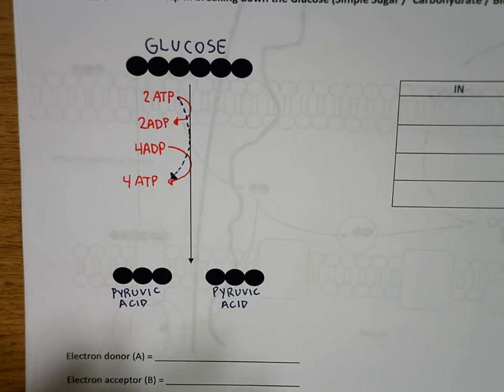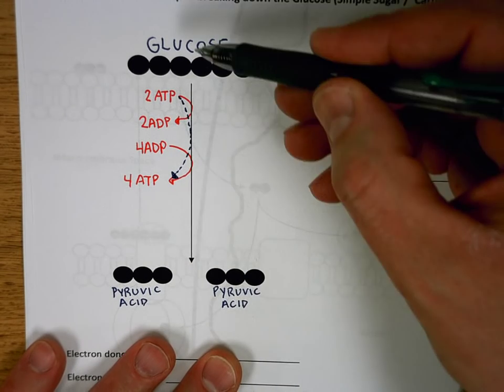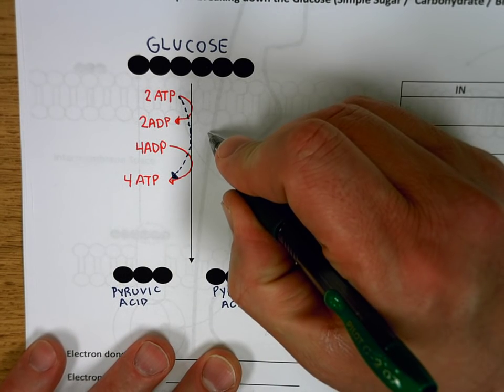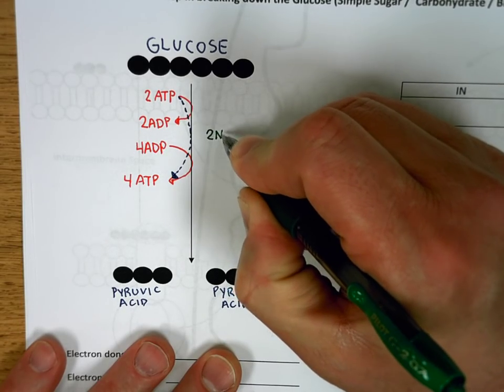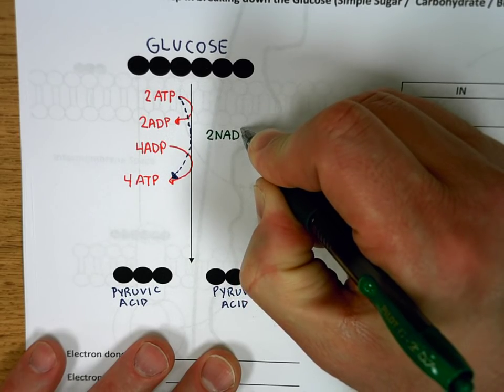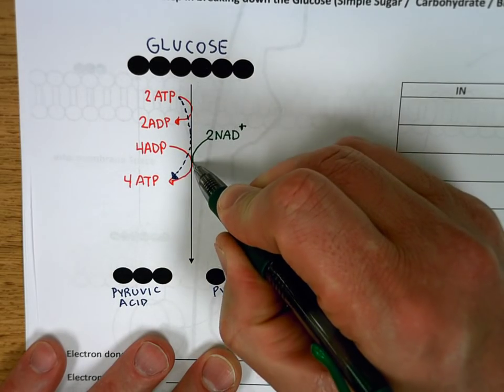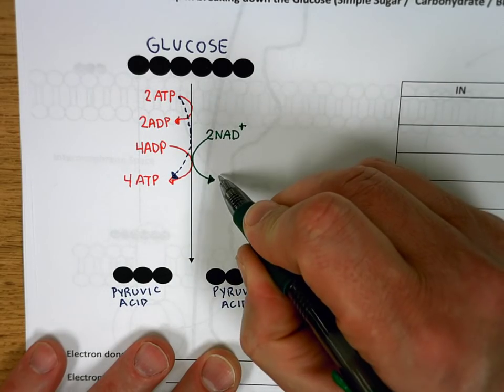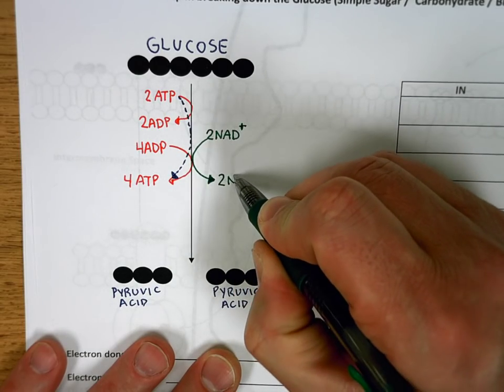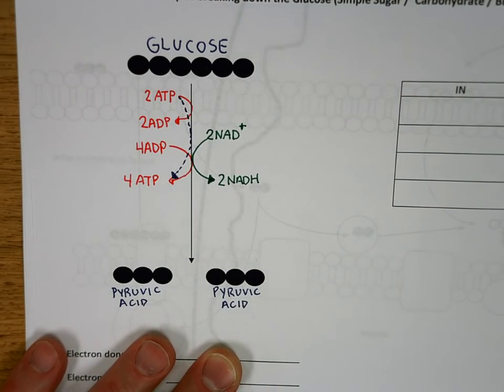Also in this process called glycolysis, in this series of chemical reactions, there's a need to remove a couple of electrons. What we use to remove and carry electrons is a little molecule we talked about called NAD. NAD comes in here, strips a few electrons off of one of these steps, and you get NADH. When NAD is carrying electrons, we call it NADH.